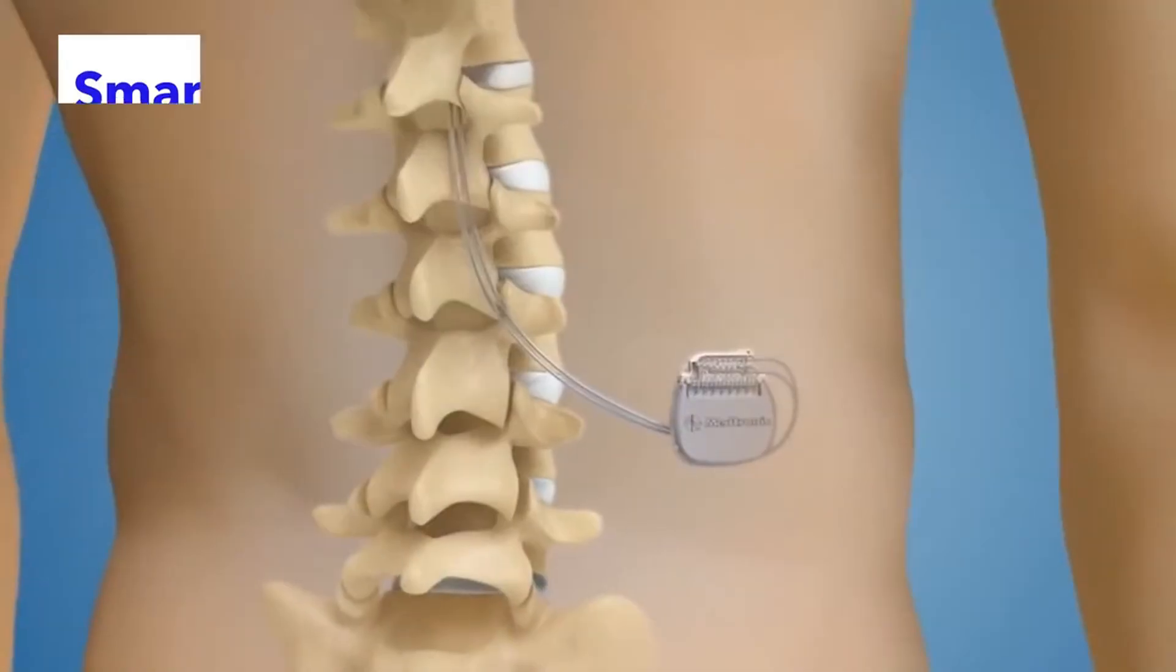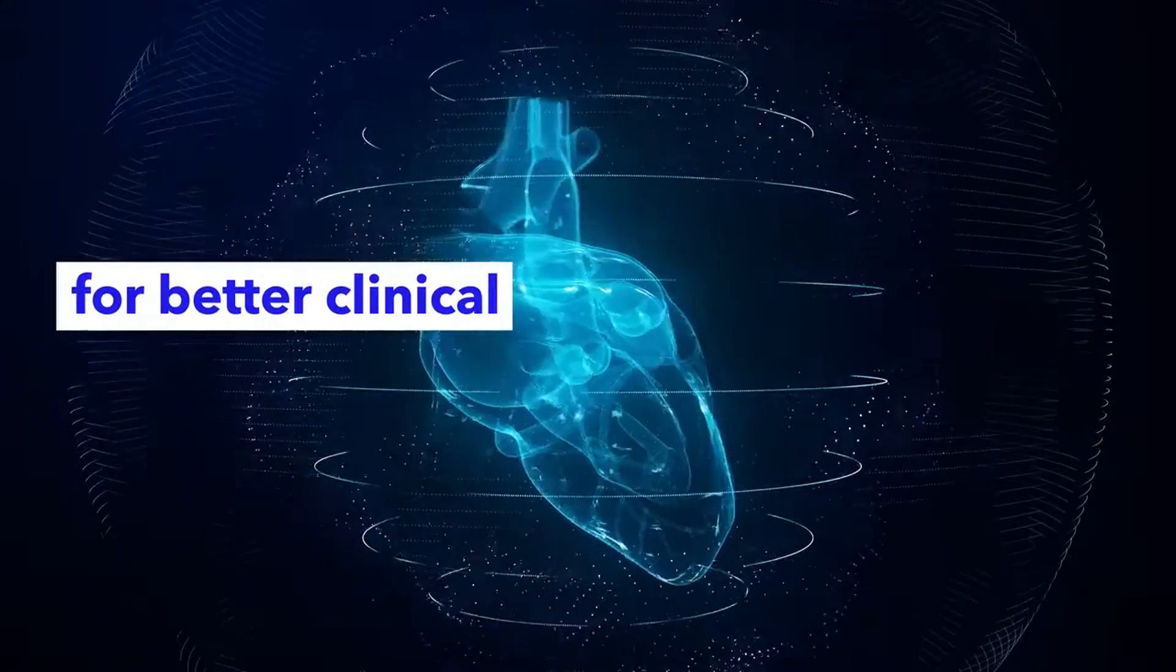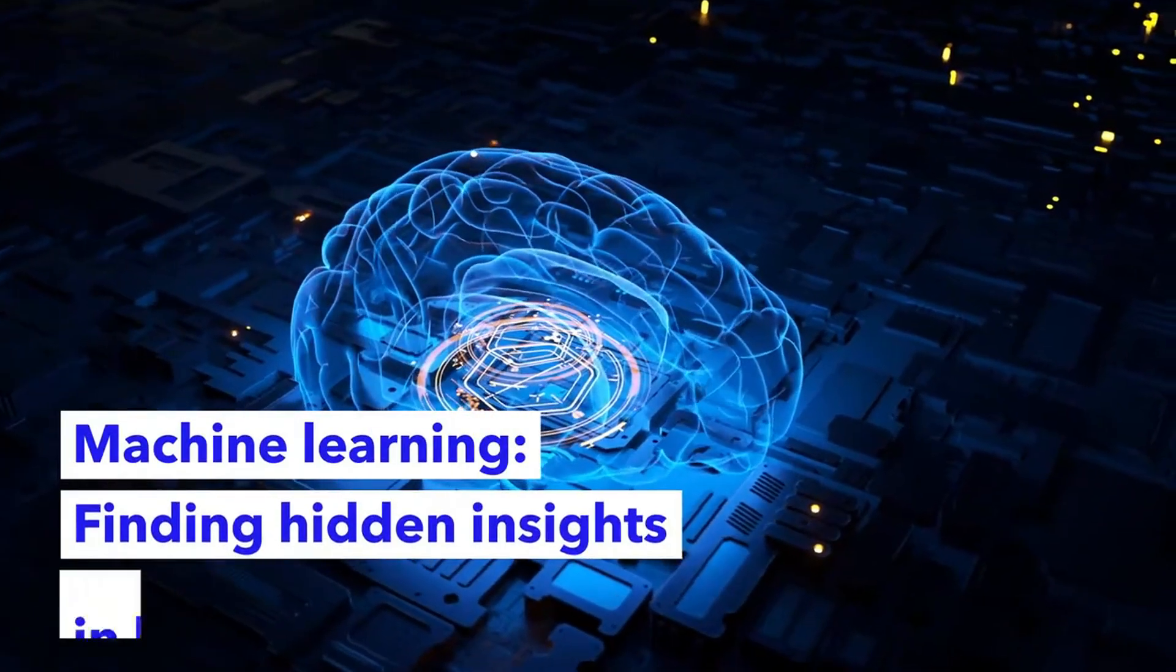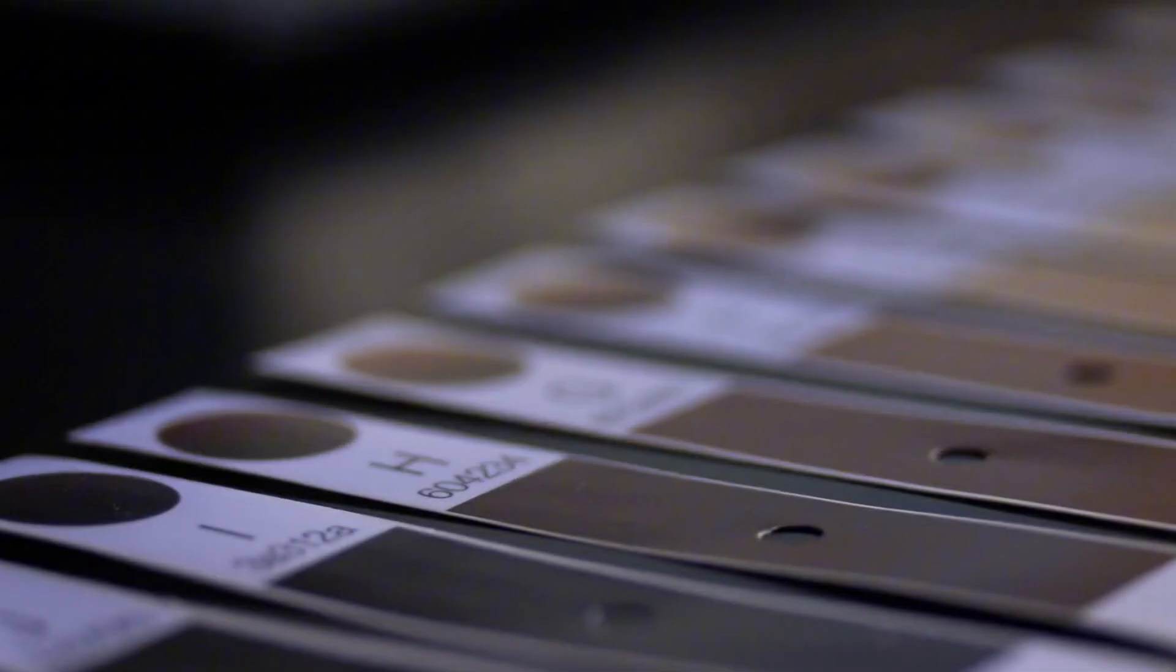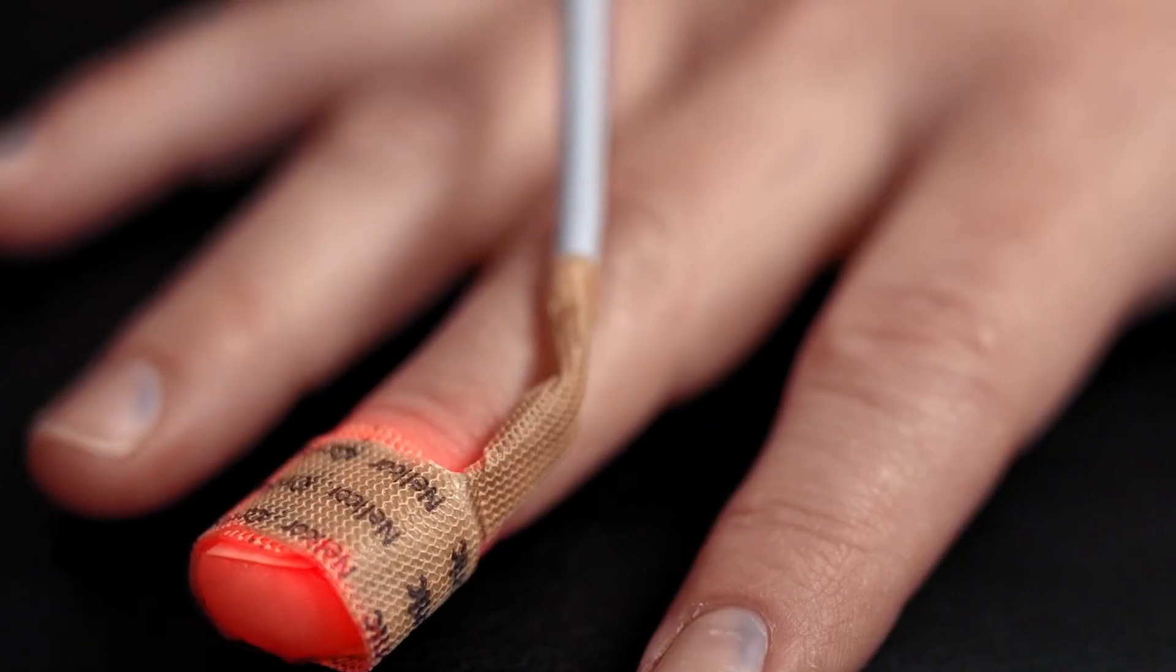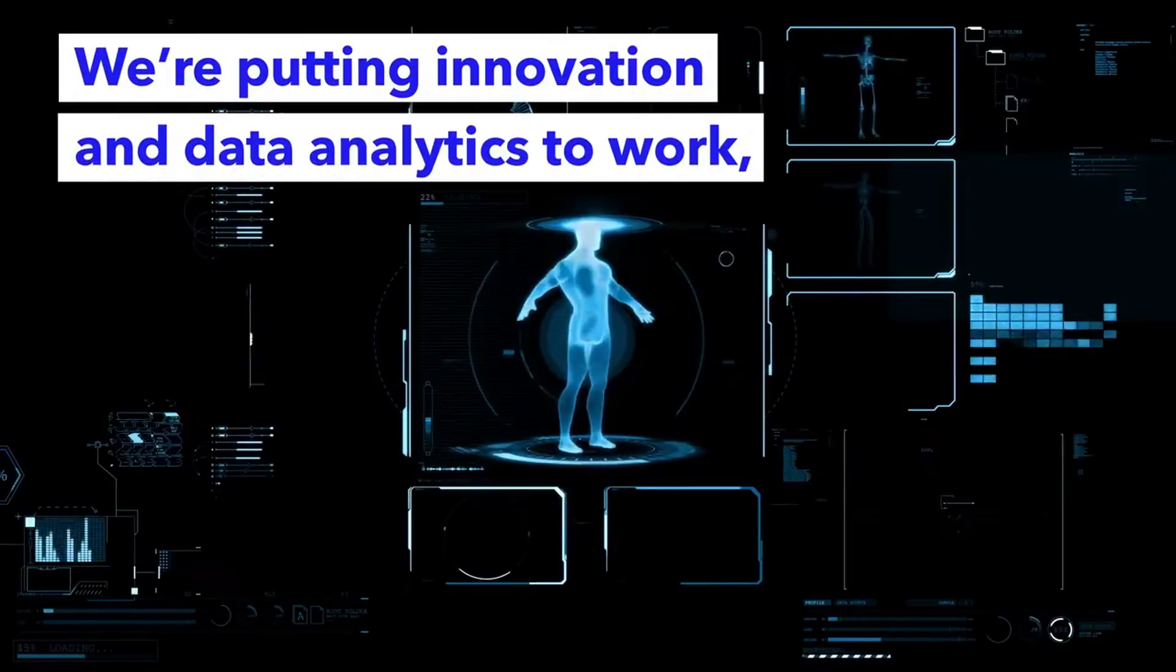Medtronic pushes AI into the operating room, particularly in cardiology and diabetes care. Their GI Genius platform uses computer vision to help spot polyps during endoscopies, while their diabetes tech is evolving into smarter, more automated insulin delivery systems. It's about guiding doctors with AI in real time, and in some cases, letting devices make the adjustments automatically.